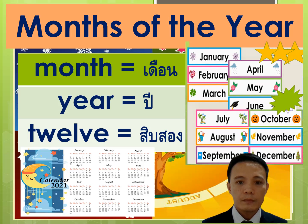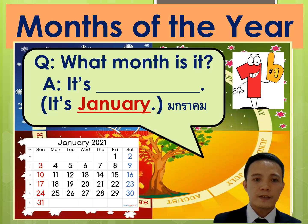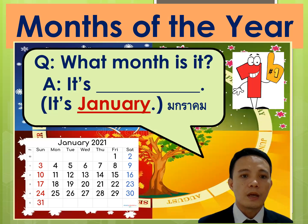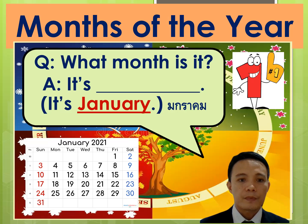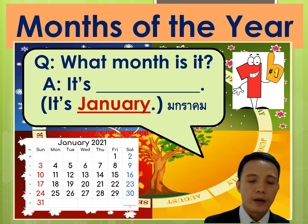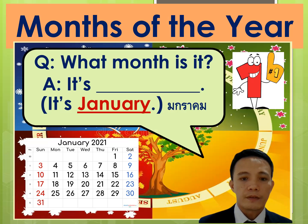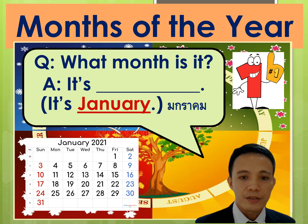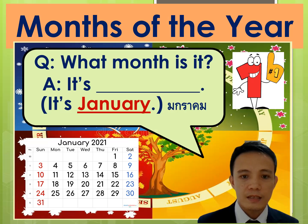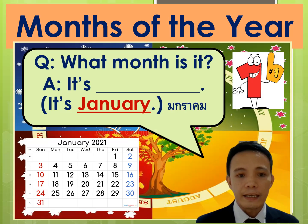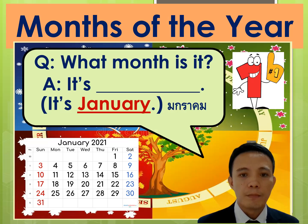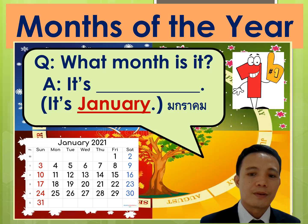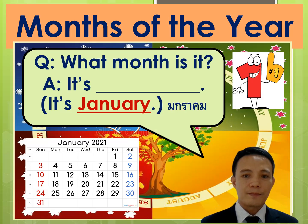Okay, next. Let's practice with this structure. What month is it? Your answer: It's — blank. For example, it's January. I have included here the Thai translation of the months. I'm not good at reading Thai letters or Thai characters, so this is for your guide. One more time — what month is it? It's January.